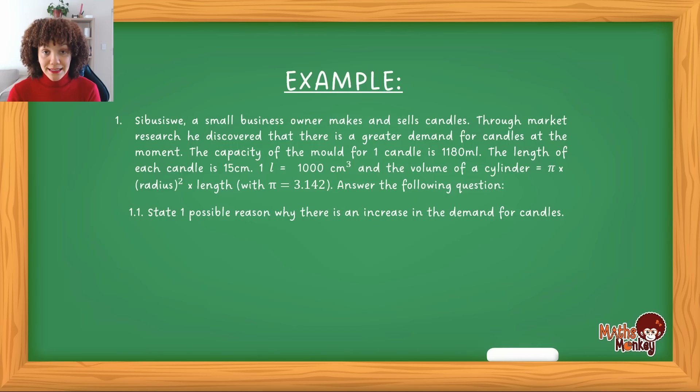There's one, a literacy question, where you have to use your reasoning and you have to answer in full sentences and you have to sort of articulate your understanding of the context. And then the second question is around just actual calculations of volume and capacity and how these link together.